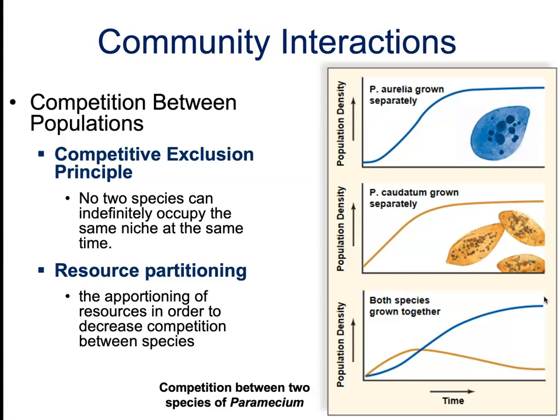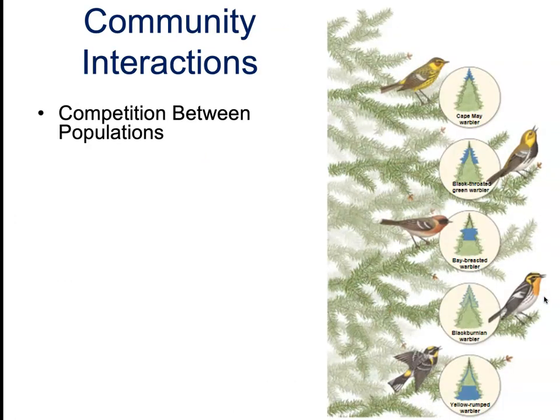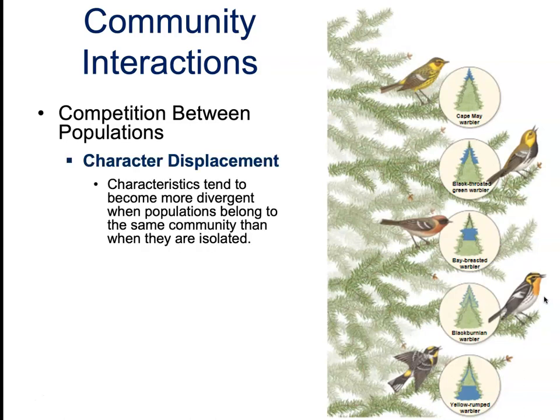Another concept to mention is character displacement: characteristics tend to become more divergent when populations belong to the same community than when they are isolated. This means that if species are competing for the same resources in the same community, we tend to see a greater divergence in their behavior. A great example of this would be our five warbler species.